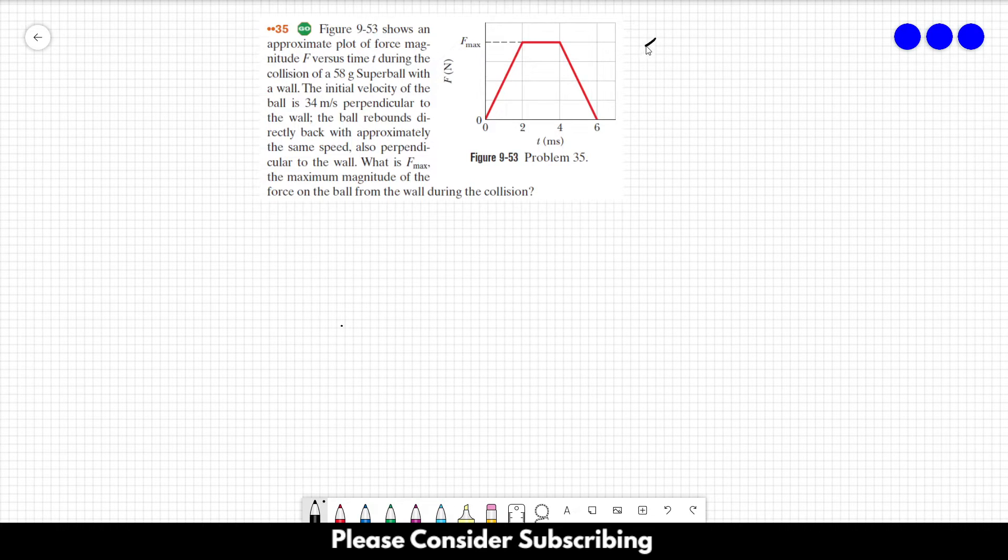Number 35. This figure here shows an approximate plot of force magnitude F versus time t during the collision of a 58 gram superball with a wall. The initial velocity of the ball is 34 meters per second.